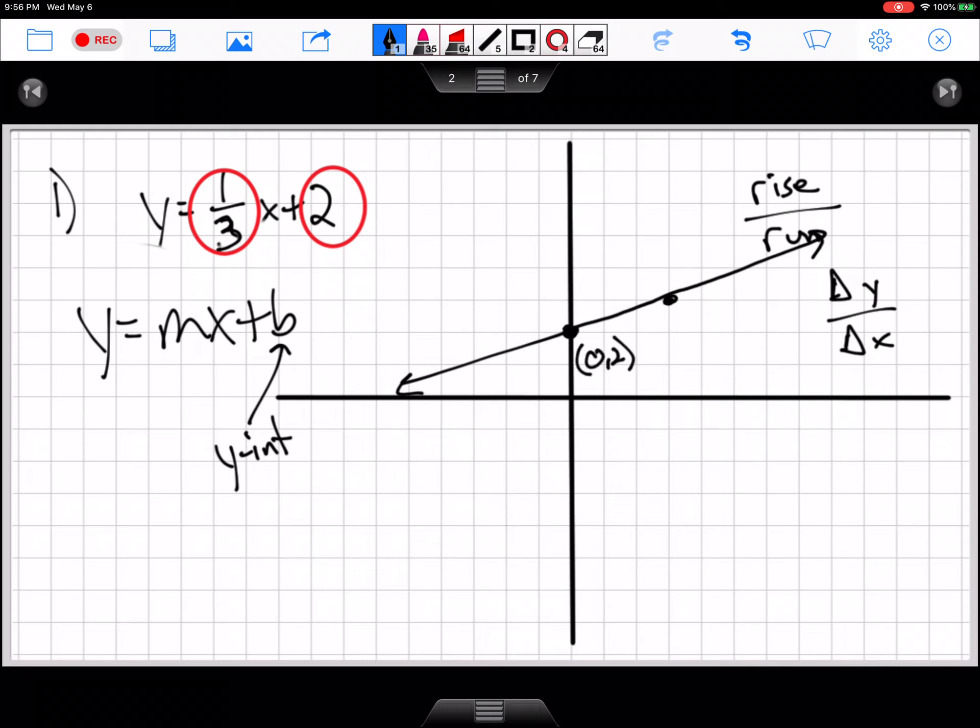And you might even notice, these 2 points were from our XY table. Here's a 0, 2 from our XY table, and here's our 3, 3 from our XY table. Technically, you only need 2 points for a line. So we can plot a point we know, the Y-intercept, and then we can apply the slope to that point to get a line. So that's kind of the shortcut. But the XY table still works if you want to do it that way.